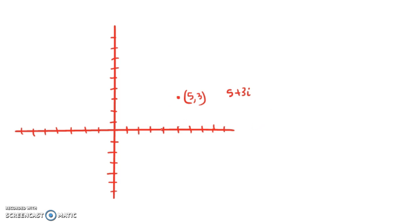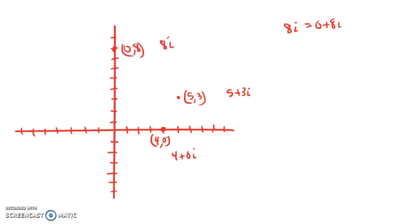Now, the number 4 would correspond to the ordered pair (4, 0), since it's 4 plus 0i. Along the x-axis — also called the real axis — we have the real numbers like 4. What about a pure imaginary number like 8i? Well, 8i is the same as 0 plus 8i, so we associate it with the ordered pair (0, 8). Going up 8 on the y-axis, that's this point — associated with 8i. So every point along the y-axis, also called the imaginary axis, is a pure imaginary number.